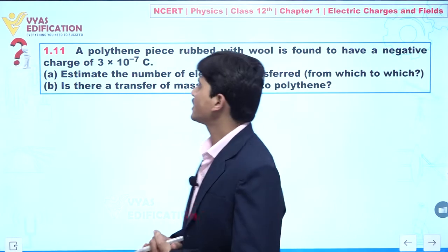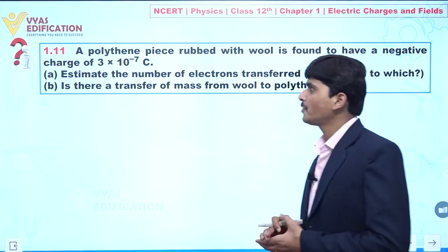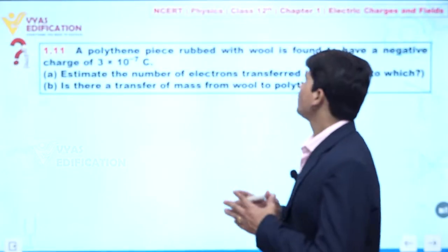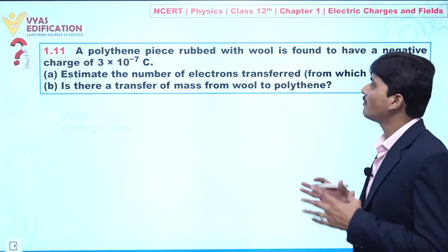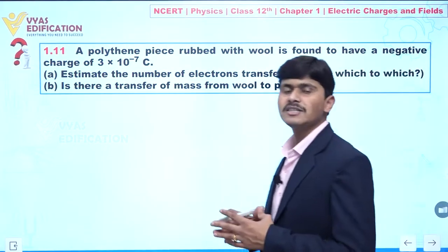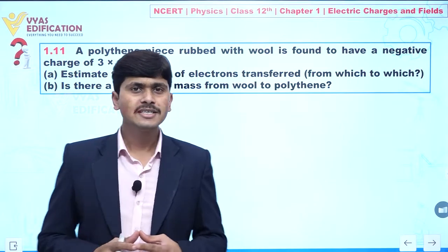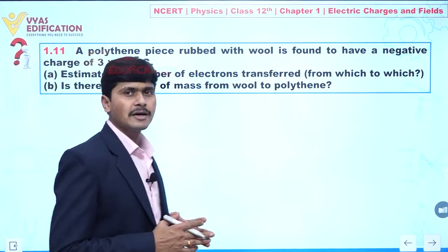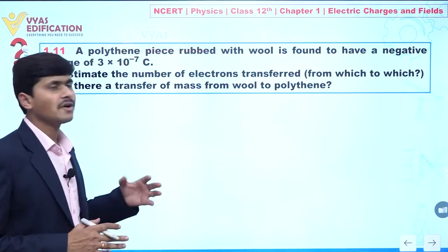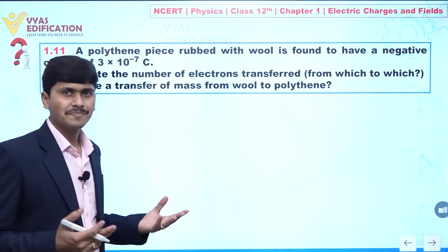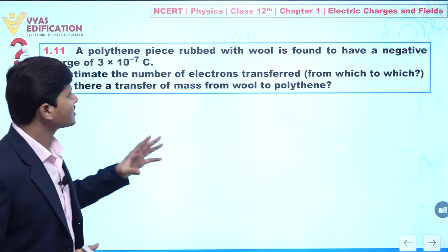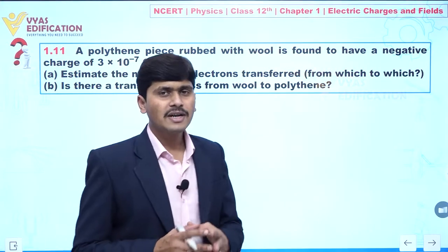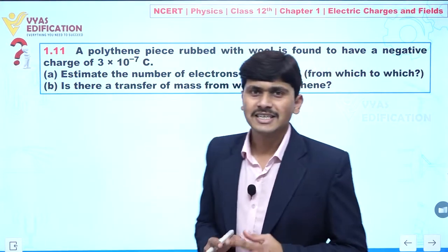Now, students, we are going to discuss question number 1.11. A polythene piece rubbed with wool is found to have a negative charge of 3 into 10 to the power minus 7 coulomb. We have to estimate the number of electrons transferred from which to which, and also determine if there is a transfer of mass from wool to polythene. Let us try to understand this question.